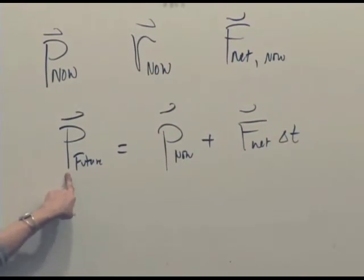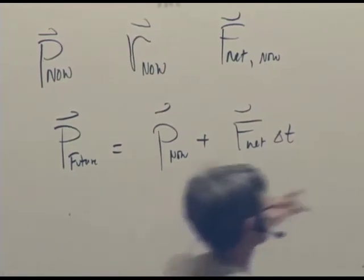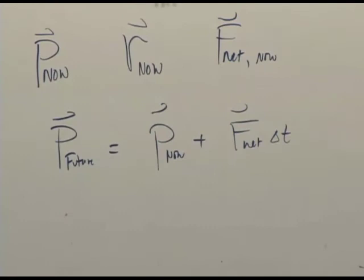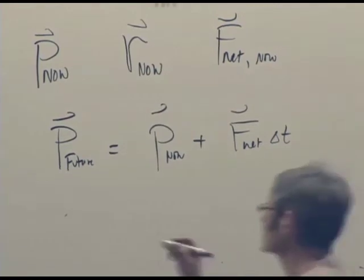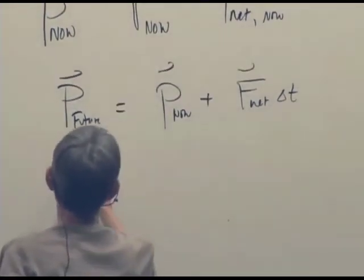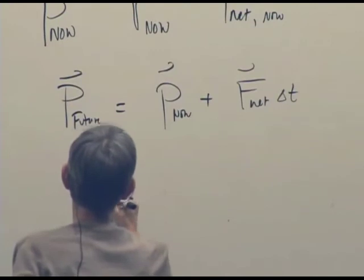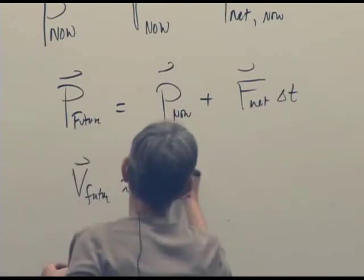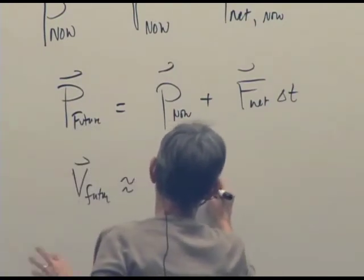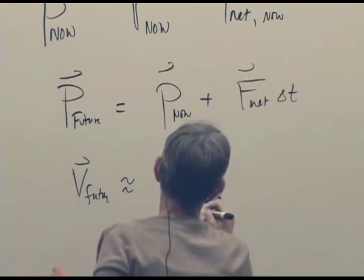We go, oh, I can extract the velocity out of that. And I can do it really very simply because as long as the thing is not moving near the speed of light, gamma is approximately one. And so therefore I can say its velocity in the future is approximately just its future momentum over its mass.